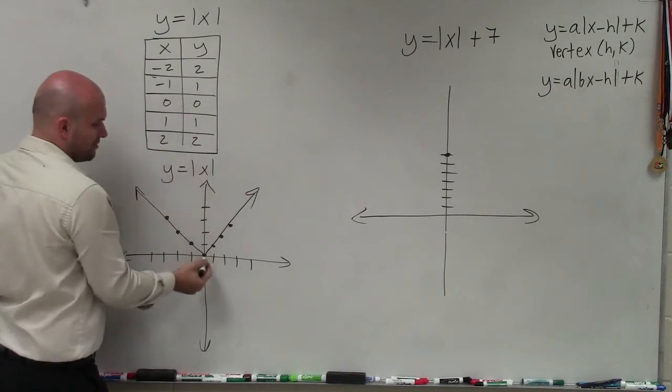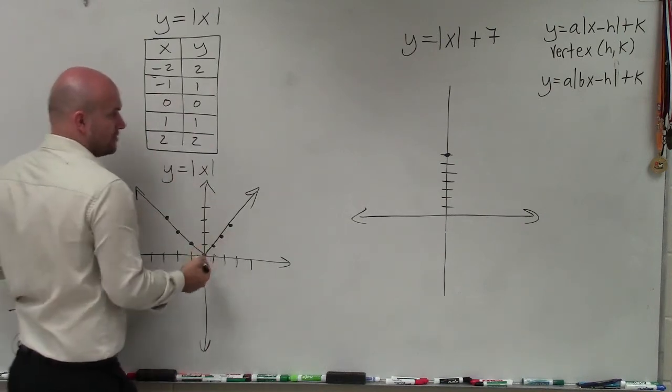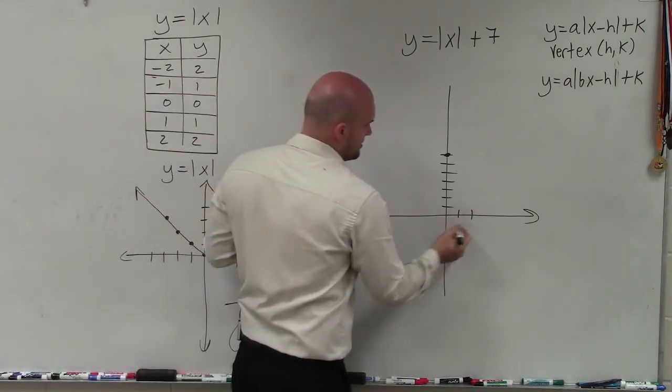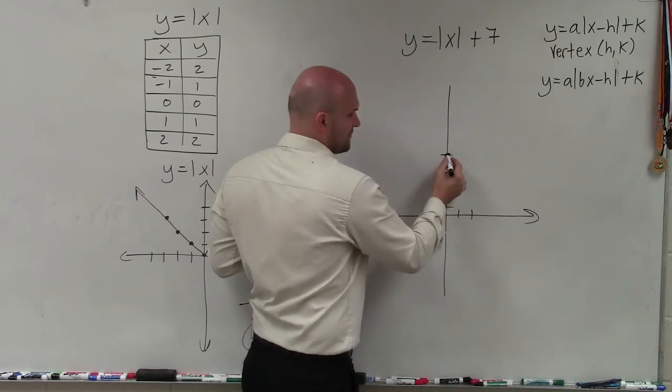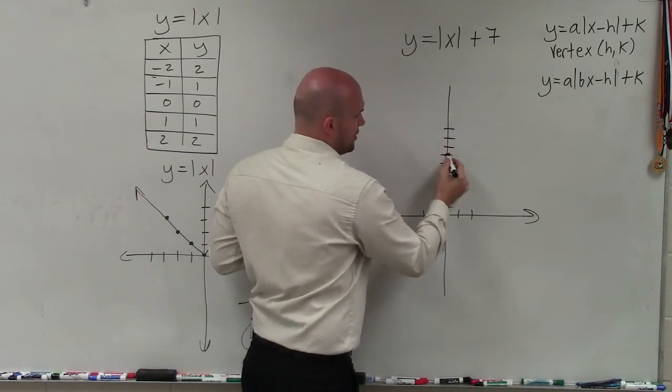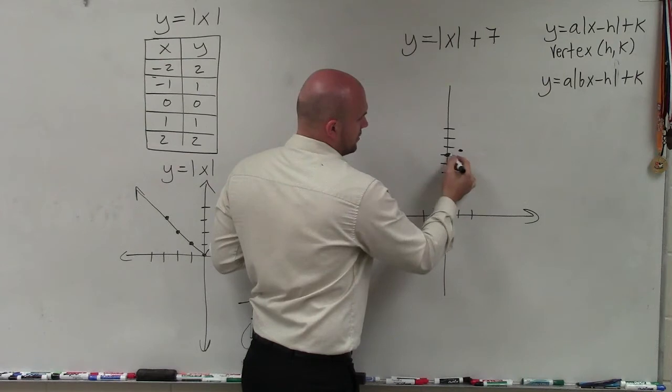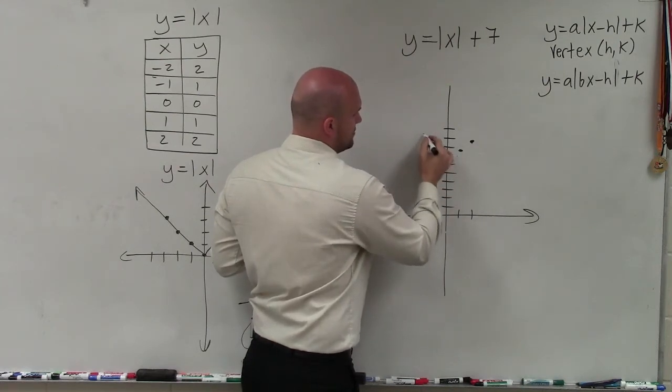So notice the relationship of the points: over 1, up 1; over 2, up 2. And I can just follow that pattern for this graph. Over 1, 1, 2, 3. Over 1, up 1. Over 2, up 2. Over 1, up 1. Over 2, up 2.